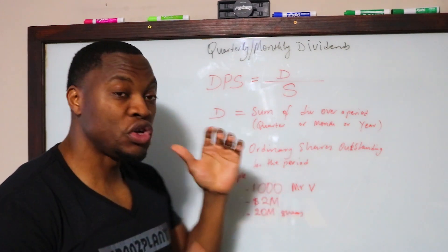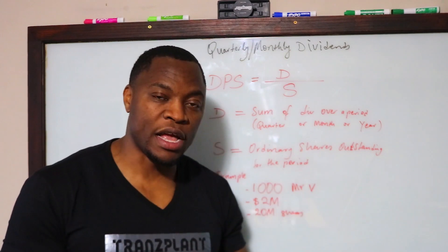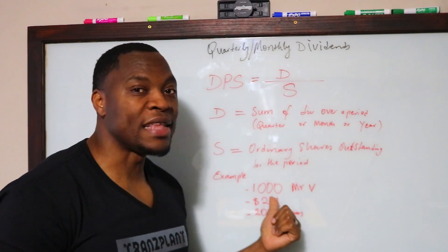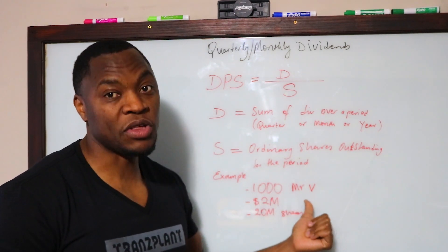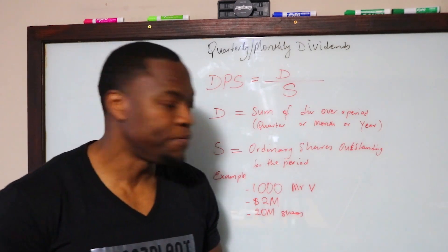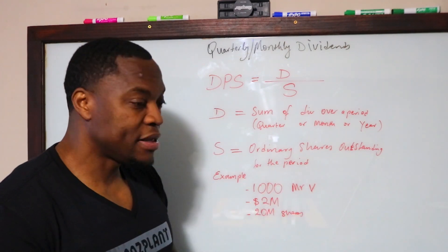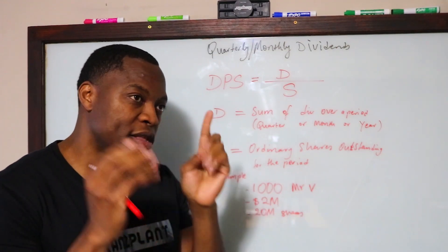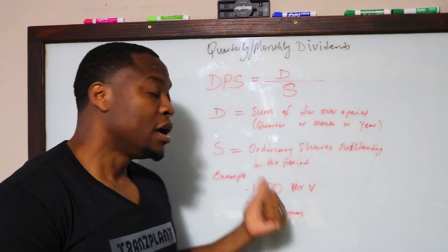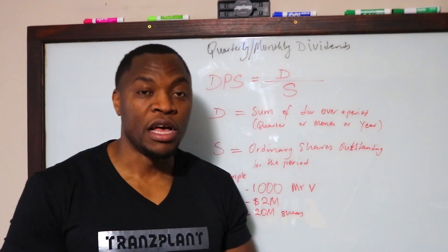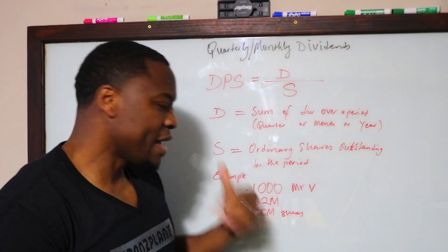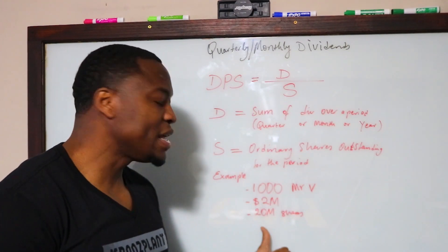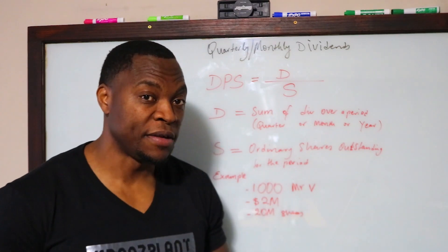Let's assume that you're an investor that buys dividend stocks. You buy, say, a thousand shares of a company — Mr. V stocks, for example. Assume that on a monthly basis you get dividends from that company, and this particular month the company says they're going to pay $2 million in dividends to the shareholders. The company has 20 million ordinary shares outstanding.